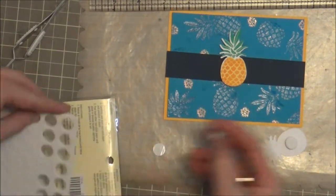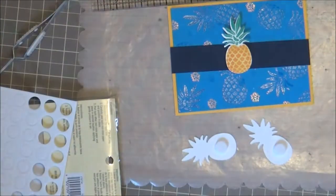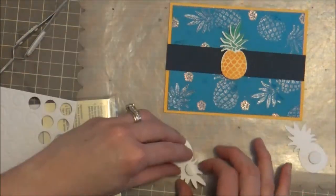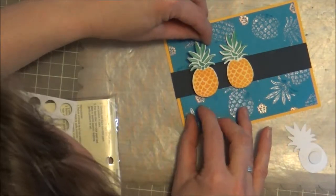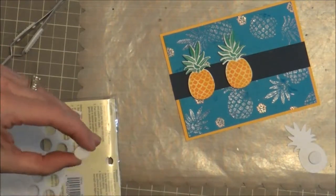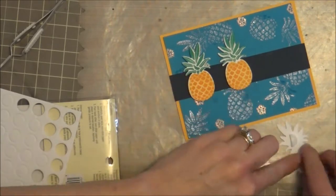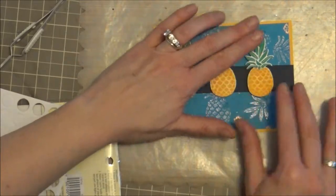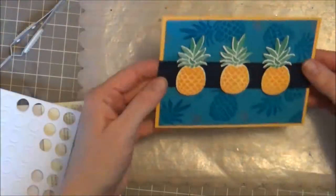I'm applying pop dots to pineapple two and three and adding those to our card. Again, just trimming down one of the large pop dots to fit right in the middle of the top there. I want to get these pineapples on. I'm adding a couple of fantastic eyelets—perfect color. I have a ton of eyelets, so I've been trying to use up some more of them.